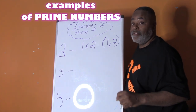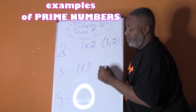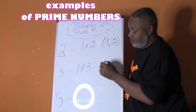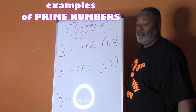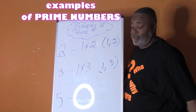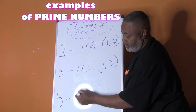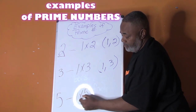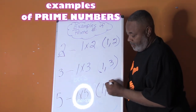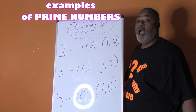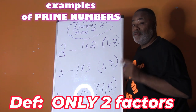What numbers can we multiply to give us three? One times three. So the factors of three are one and three — again, only two factors. What numbers can we multiply to give us five? One times five. So our factors of five are one and five. These are prime numbers because prime numbers only have two factors: one and the number.